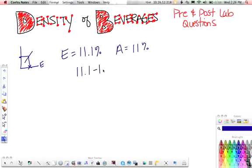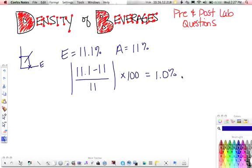So you take accepted minus experimental, divide it by accepted, and then take the absolute value and multiply that whole thing by 100. So you end up with 0.1 over 11 times 100, which actually works out to 1.0%. So we had a 1% error, which as far as I'm concerned is excellent.